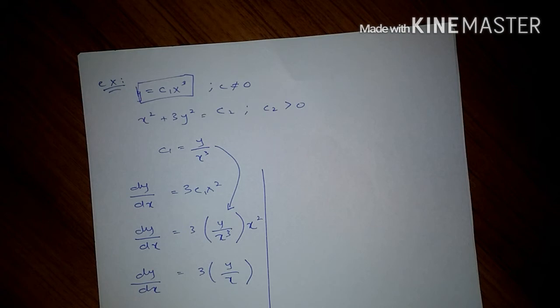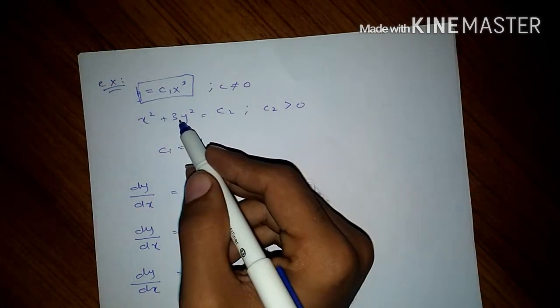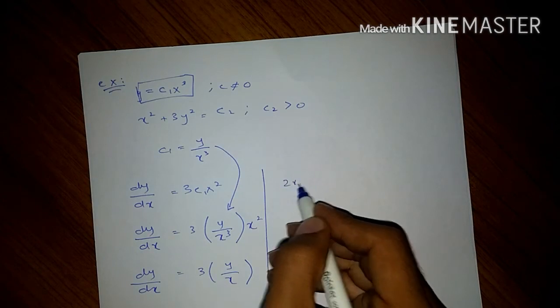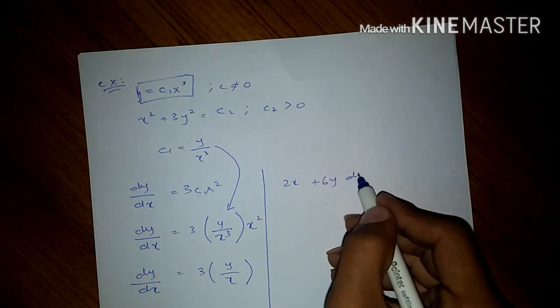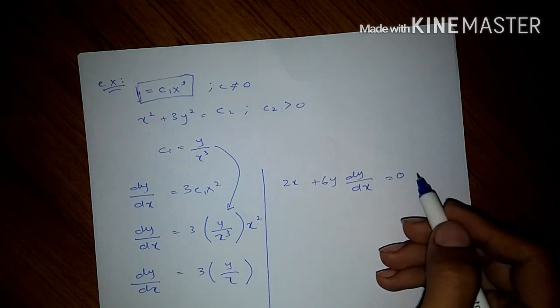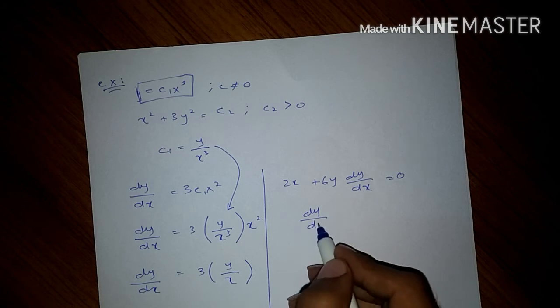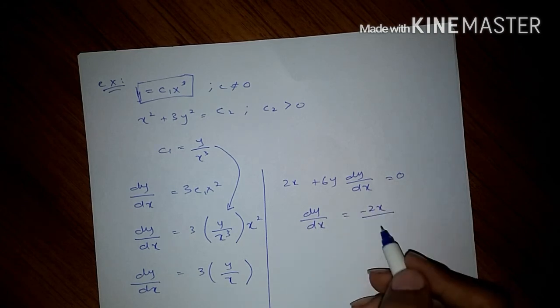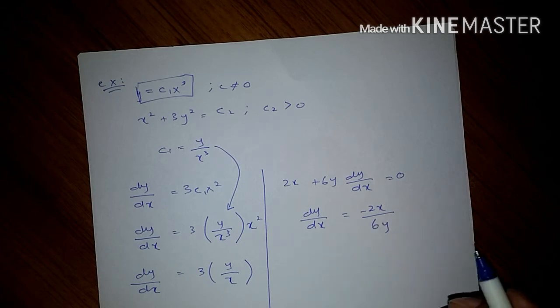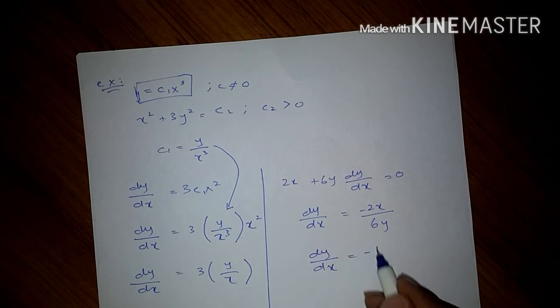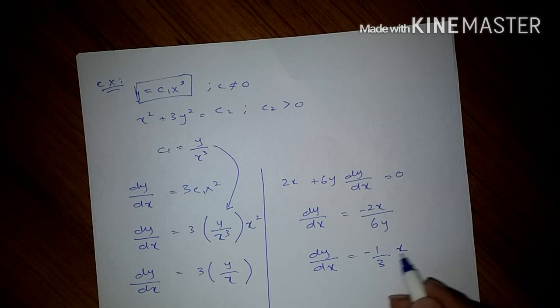Now differentiating this equation with respect to x we get 2x plus 6y dy/dx equals to 0. So dy/dx equals to minus 2x upon 6y, or dy/dx equals to minus x upon 3y.